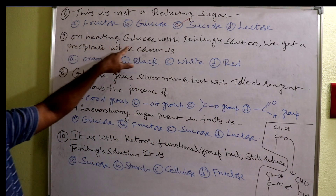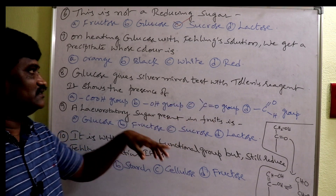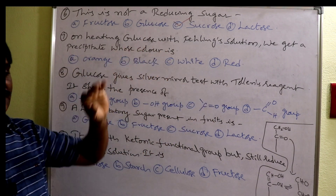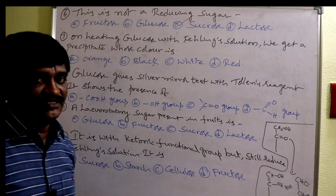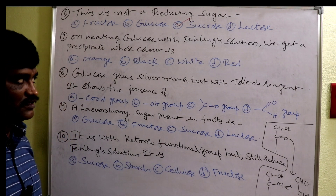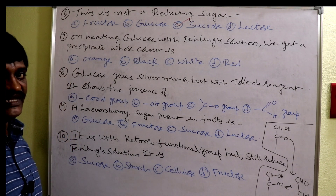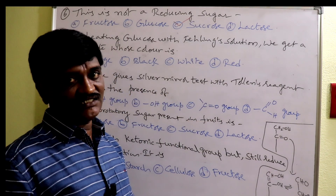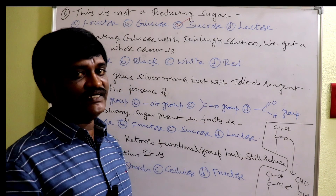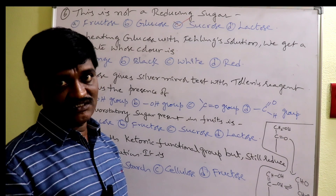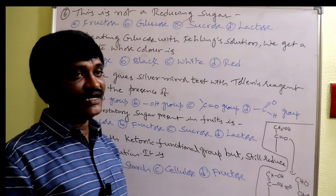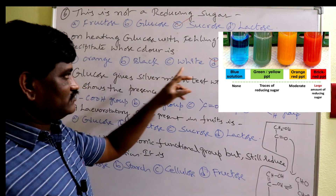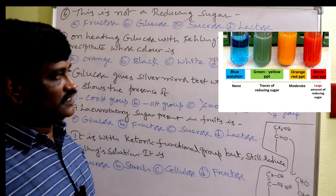On heating glucose with Fehling solution, we get a precipitate. Fehling solution is an equimolar mixture of Fehling A and Fehling B. When carbohydrates are heated with Fehling solution, the color of the precipitate formed is red — a brick-red color — which corresponds to cuprous oxide (Cu₂O).